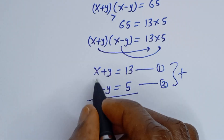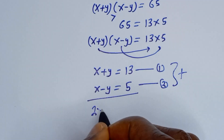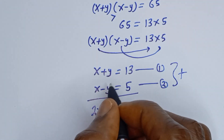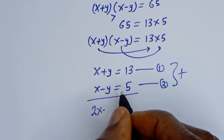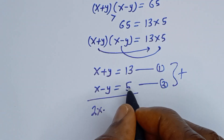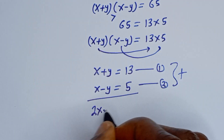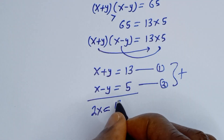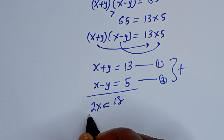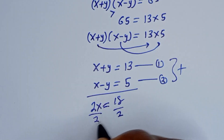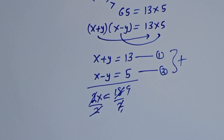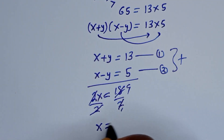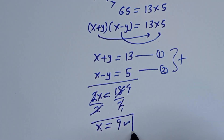Adding the two equations together: x plus x gives 2x, and plus y minus y gives 0. Then 13 plus 5 is equal to 18. Dividing both sides by 2: 2x divided by 2 cancels, giving x is equal to 9. We've gotten the value of x, which is equal to 9.